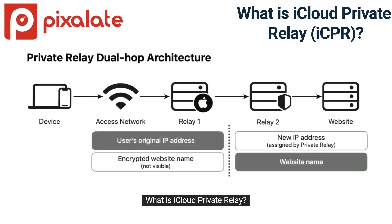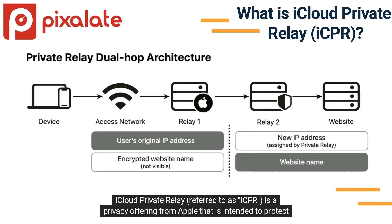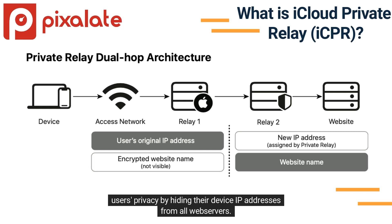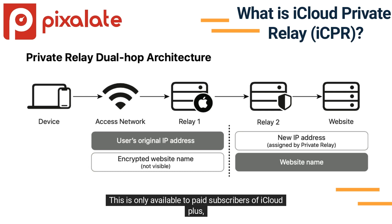What is iCloud Private Relay? iCloud Private Relay, referred to as iCPR, is a privacy offering from Apple that is intended to protect users' privacy by hiding their device IP addresses from all web servers. This is only available to paid subscribers of iCloud+.